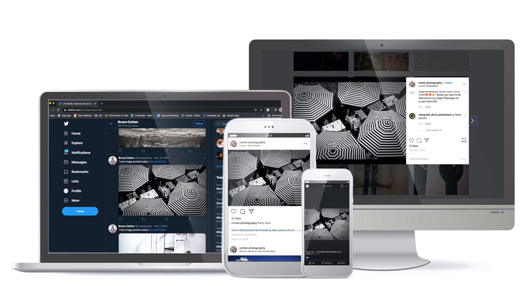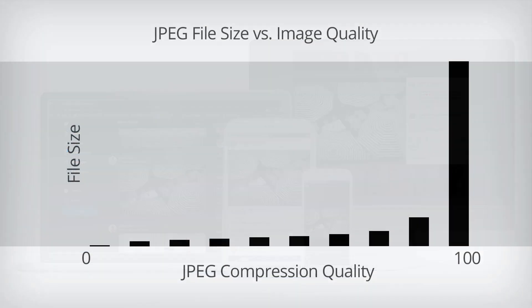The quality setting determines the final file size of JPEG images. Higher quality means less compression, resulting in a larger file size.